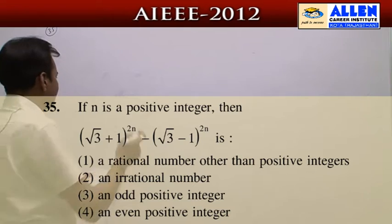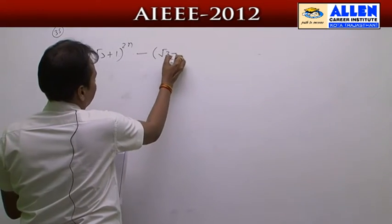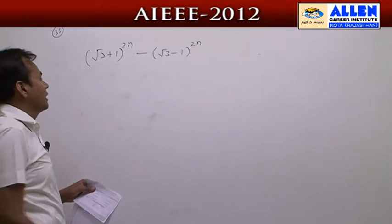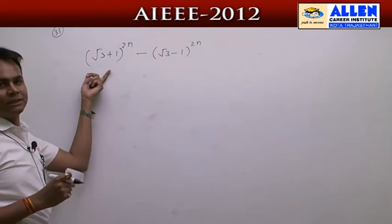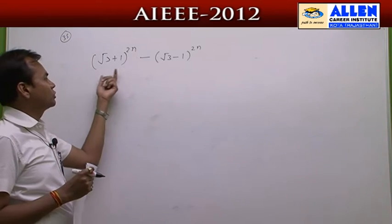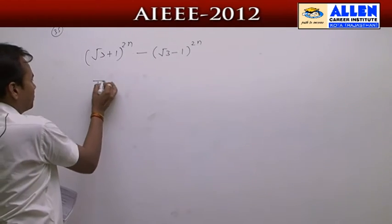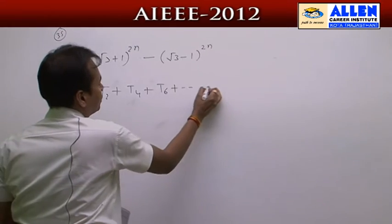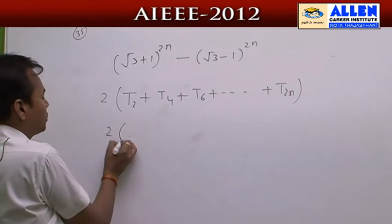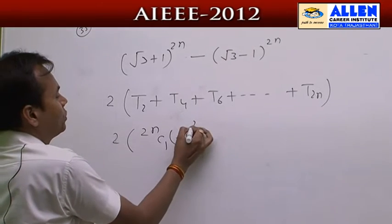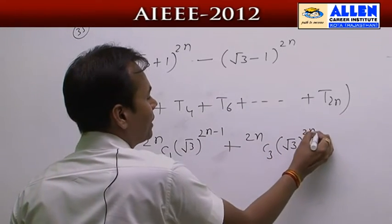Question 35: (√3 + 1)^2n − (√3 − 1)^2n. If we expand this expression, the total number of terms is 2n + 1. Similarly, the second expression also has 2n + 1 terms. All terms of the first expression are positive; the second has alternating signs. Subtracting, the odd-indexed terms cancel and we are left with twice the even terms: 2·t₂, 2·t₄, 2·t₆, ..., 2·t₂ₙ.